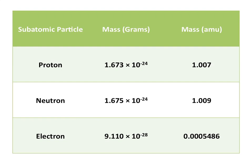You might also notice while looking at this chart that the mass of an electron is four orders of magnitude smaller than either a proton or a neutron. And so, for most basic chemistry purposes, the masses of electrons in an atom are not significant contributors to the overall weight of an atom.